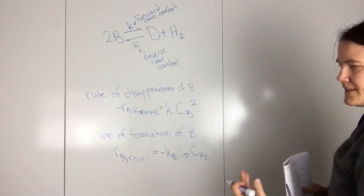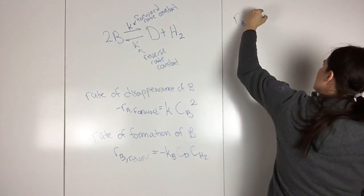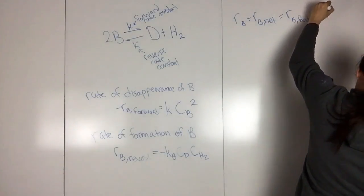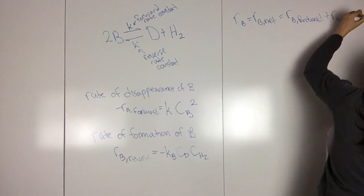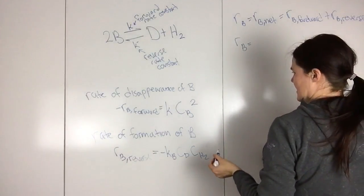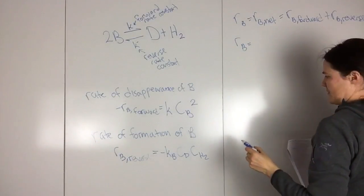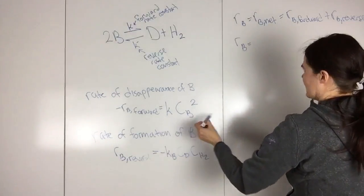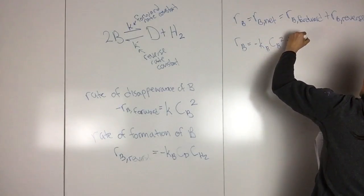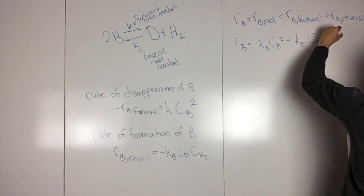And then to find the complete rate law, this is equal to RB net. So RB forward plus RB reverse. And so then we can plug these in, so RB is equal to, and then since this is the rate of disappearance, but the way this is written, that's the rate of formation, then I need to put a negative sign on this. So this is negative KB CD CH2.